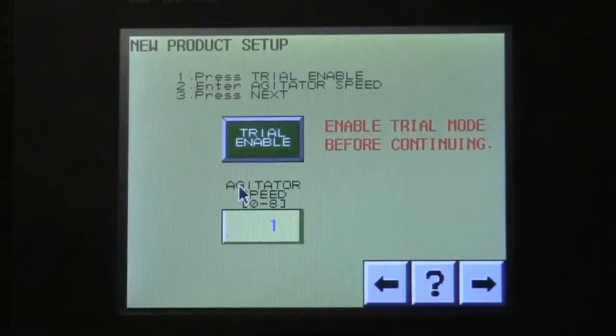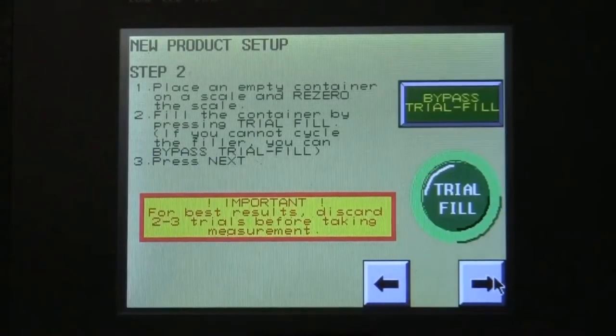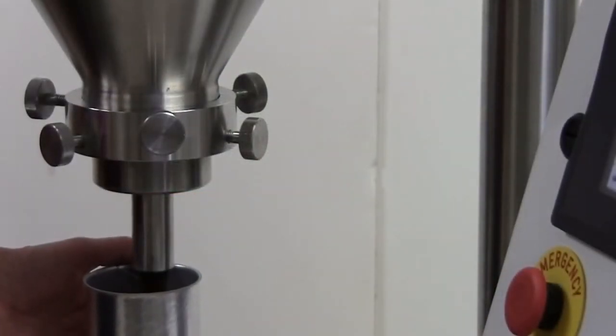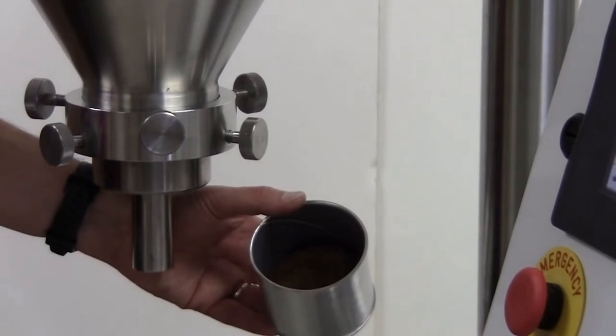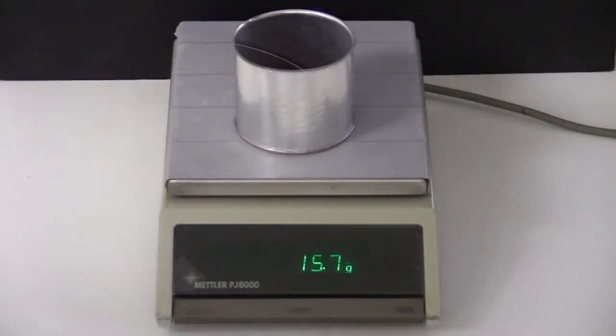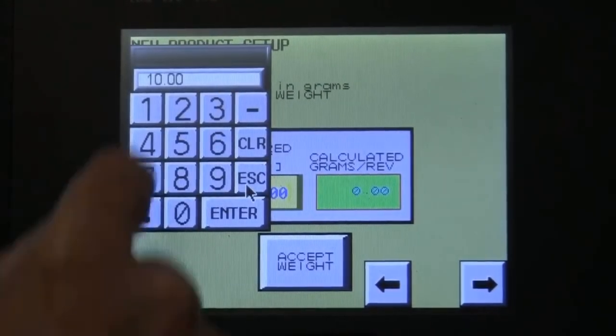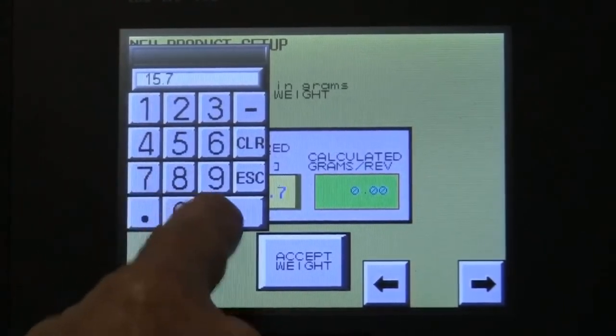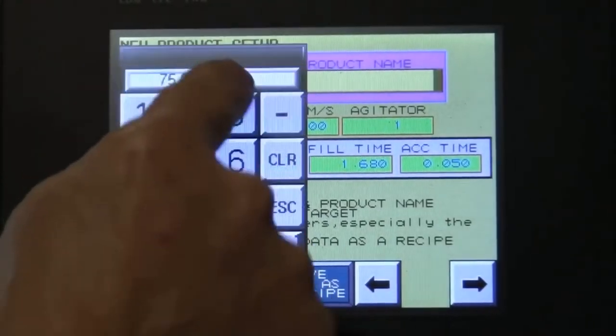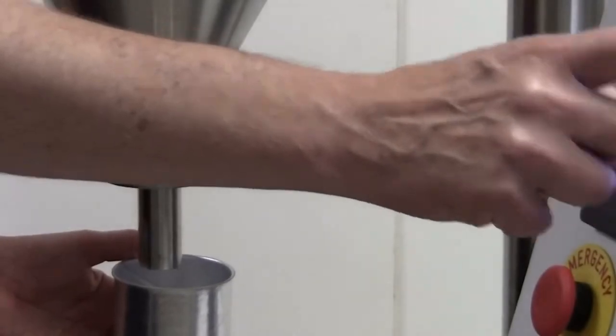Naubach's weight setup software quickly, easily, and automatically sets up fill parameters. Simply perform a trial fill with your product, weigh the result, enter the actual weight, enter the desired fill weight, and the system automatically adjusts.